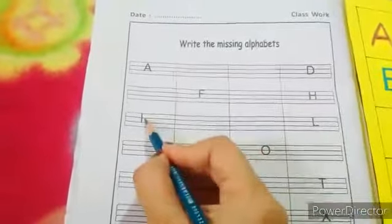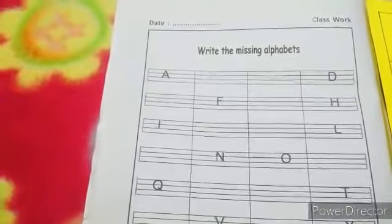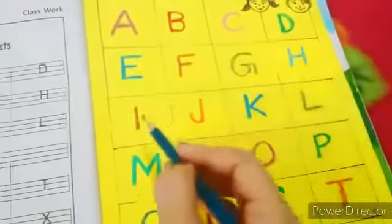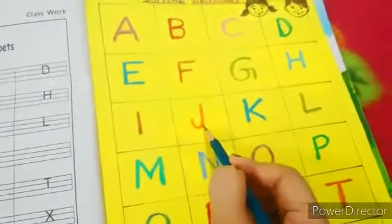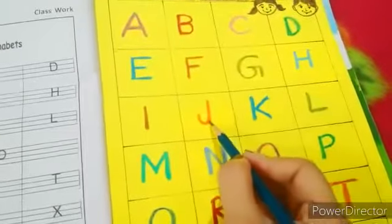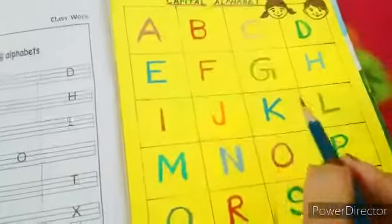H and I are already given. Let's find out what are the missing letters after I. H, I, J, K. So the missing letters are J and K. Let's write J and K over here.